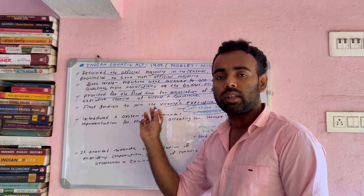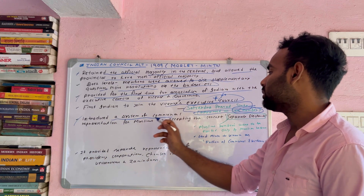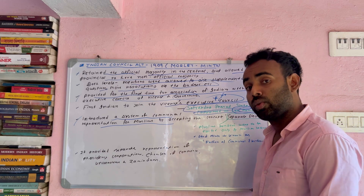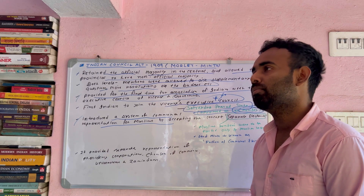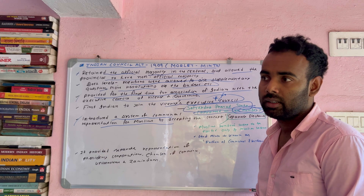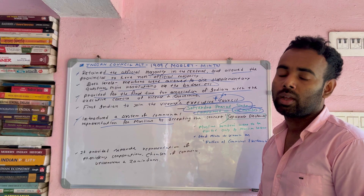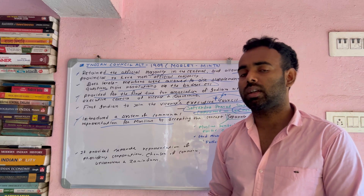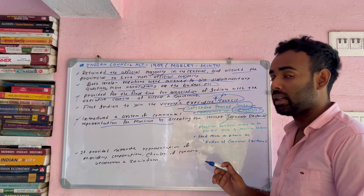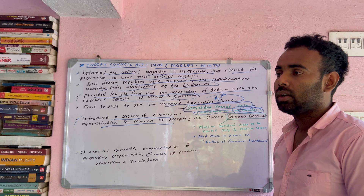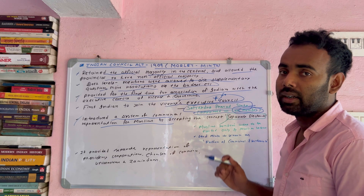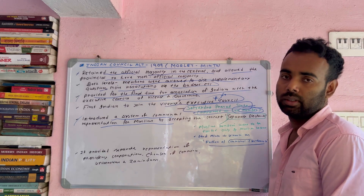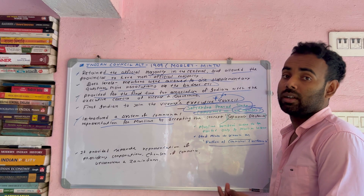For the first time we saw communal representation for Muslims. This system is a separate electorate. This is a very interesting development. The first time we saw the separate electorate — the first time we saw the Muslim people given a separate electorate. This became a communal electorate — a special electorate. He is called Lord Minto.